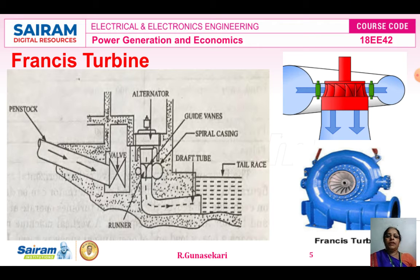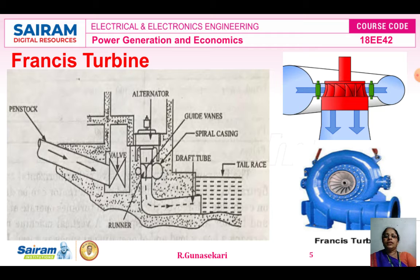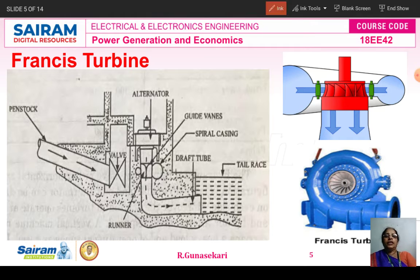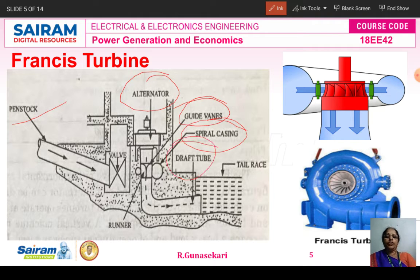The first type is the Francis turbine, which comes under the reaction turbine. Three different images of the Francis turbine are shown for understanding. The Francis turbine consists of a penstock, alternator (that is the generator), gate vanes, spiral casing, draft tube, tail race, head race, and runner blades.